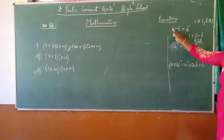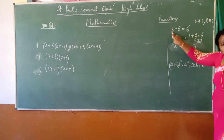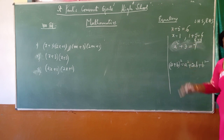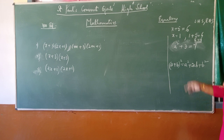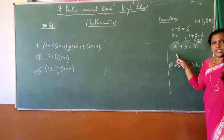LHS and RHS will be equal only when the value of x is equal to 1, not for any other value. If you put 2, will it be equal? If you put 3, will it be equal? No.